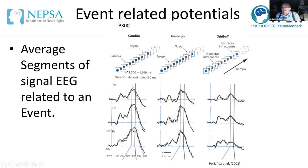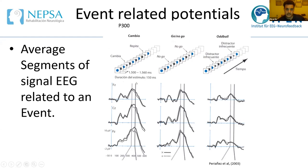Regarding the dotted versus solid lines in the diagram: I'm using this diagram only for illustration purposes. I believe the dotted line would be the subjects and the solid line the control group, but I'm not entirely sure. I'm not focusing on the specific study — just using the diagram to explain what an ERP looks like and how it is obtained.